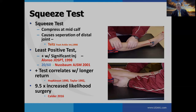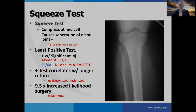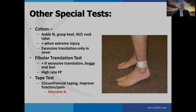The squeeze test correlates with longer return to play, and Calder found that a positive squeeze test carries nine and a half times the increased likelihood that the athlete will need surgical stabilization. The squeeze test is also good for ruling out fibular fracture. With any rotational injury, we need to be cognizant of the possibility of a proximal Maisonneuve fracture of the fibula. Other tests — the cotton test, fibular translation test, and tape test — don't often have good performance on evaluations.